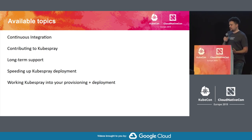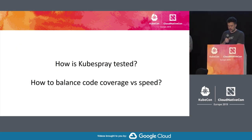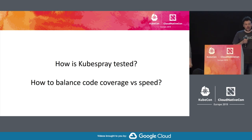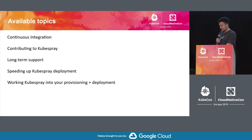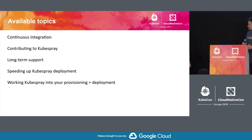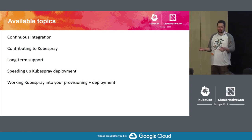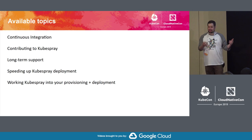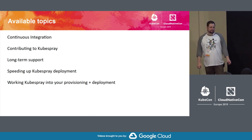The topics we'll discuss include: first, continuous integration — how we can improve coverage, whether we test enough, whether it's stable, and whether there are a lot of errors during deployment. Second, contribution to KubeSpray — how we could improve the experience if you file an issue or a PR. Third, long-term support — everyone who wants to deploy KubeSpray is excited to deploy from master, but what happens after that? Do you want to stay on the same version, fork, go to the next stable release, or stay on master?